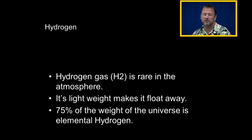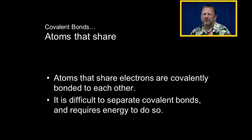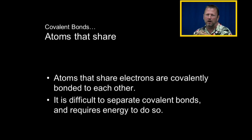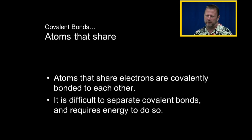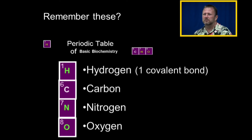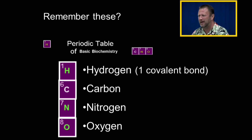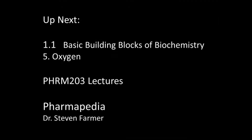75% of the visible, known universe is hydrogen in its elemental form. Those orbital 'houses' that electrons live in are called valencies. When those houses share electrons, that's called a covalent bond. Covalent bonds are very difficult to separate, so when we read in pharmacology about something that has caused a covalent bond on a receptor, we know that's essentially irreversible. Hydrogen can make one covalent bond.